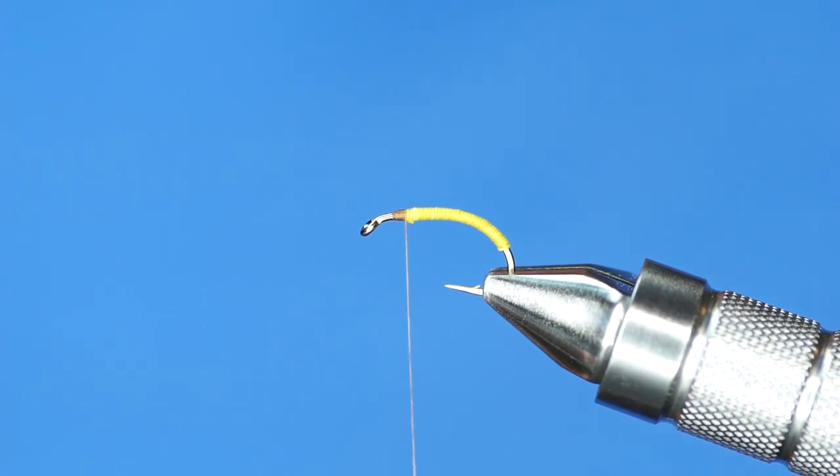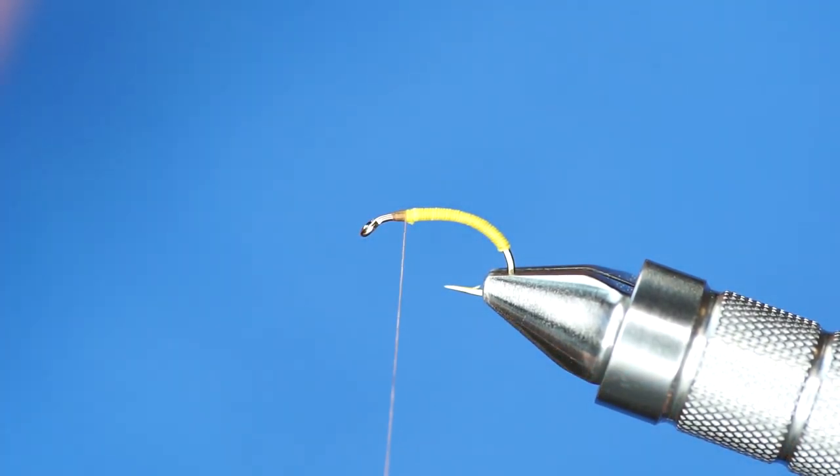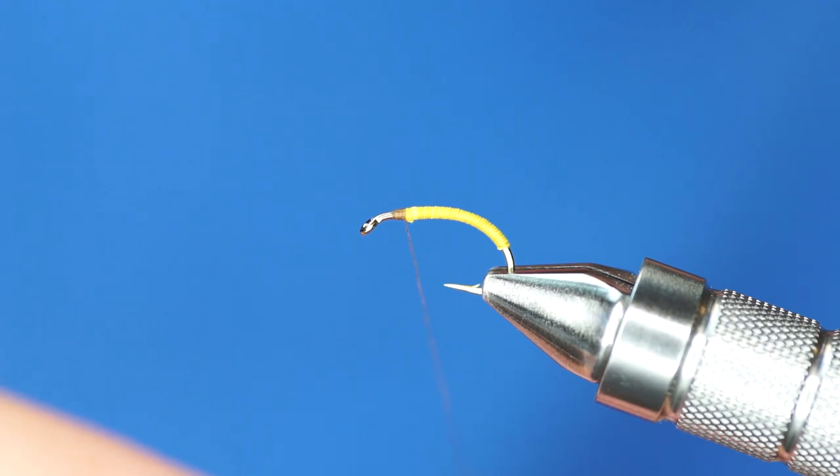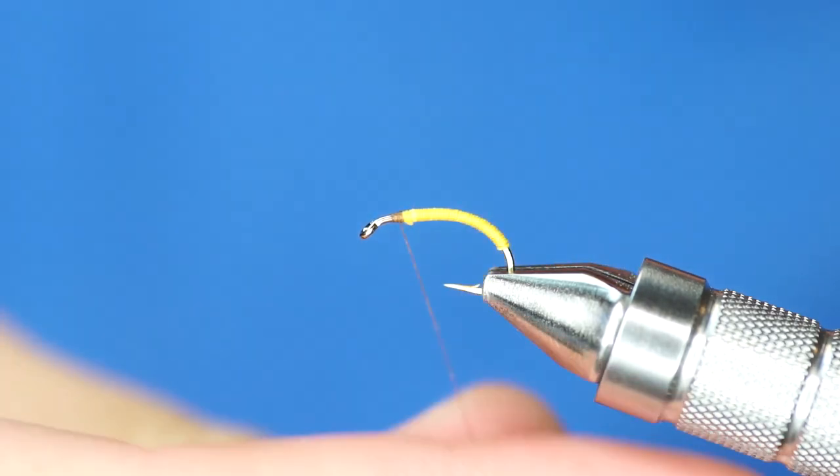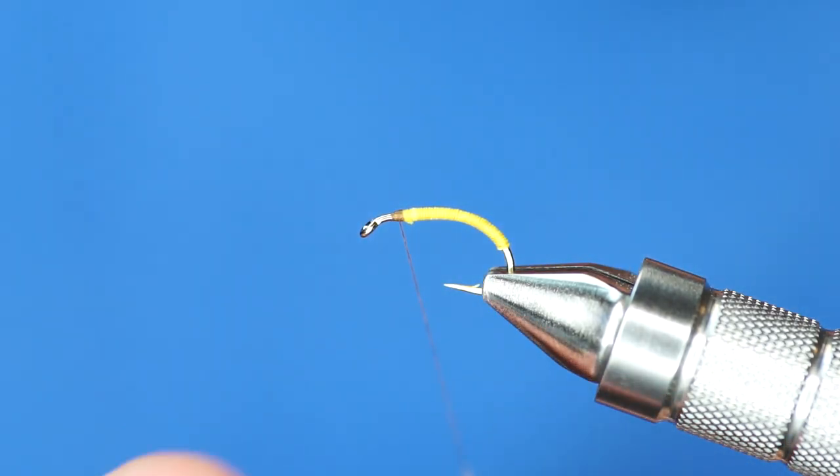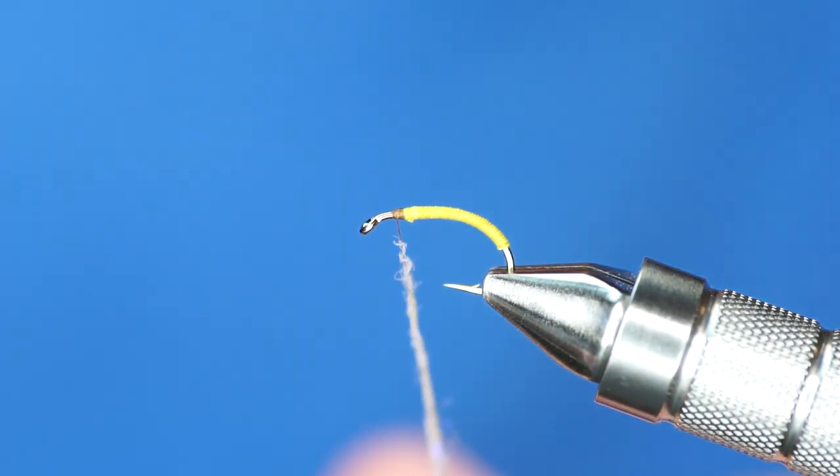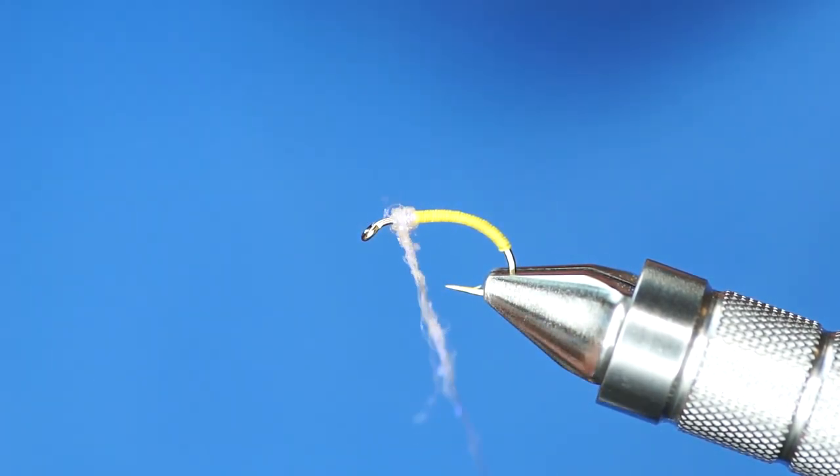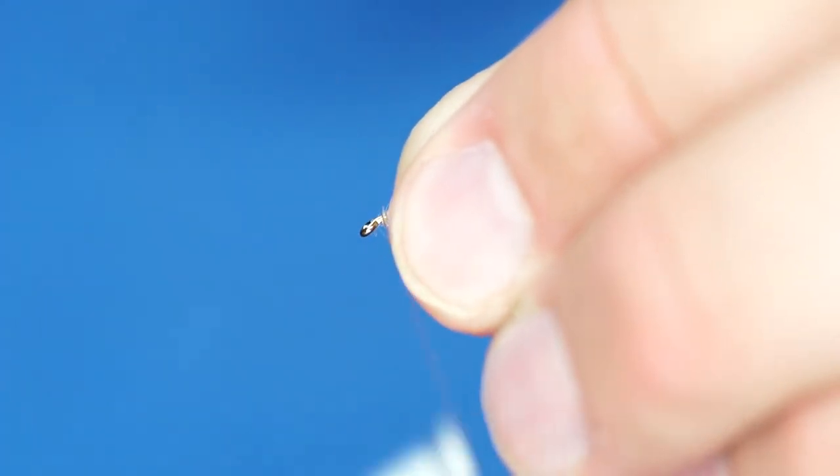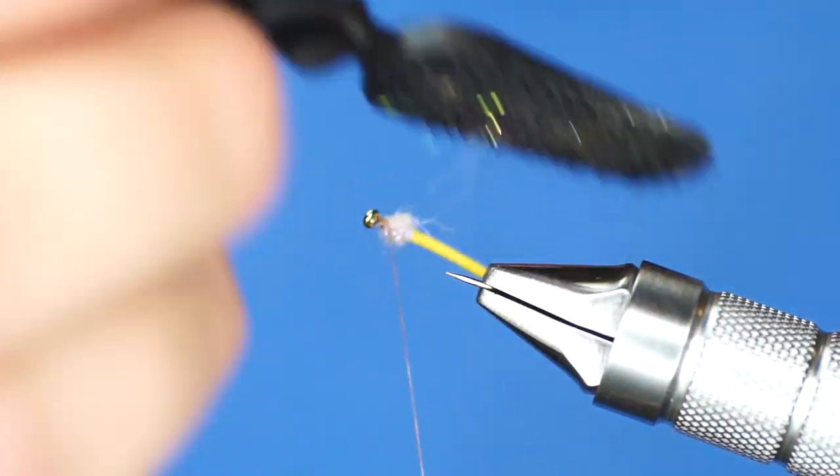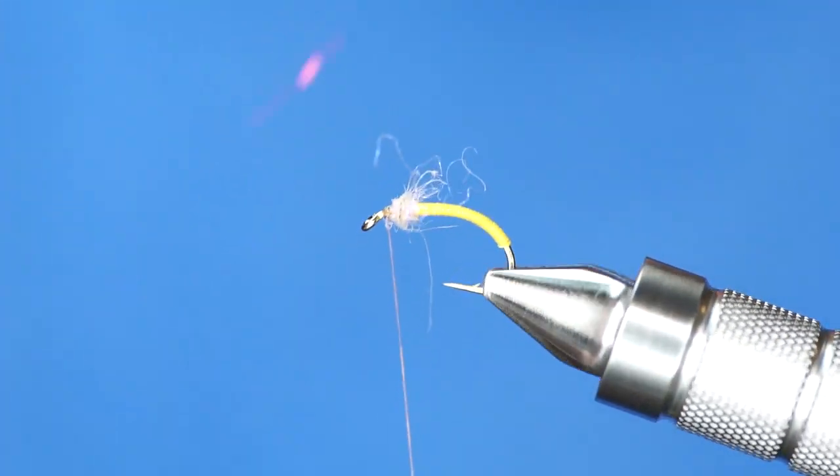So I've just got some brown or camel 8-0 unithread. And for the little thorax or hot spot or whatever you want to call it, I'm just going to use some UV tan ice dub. Just a little sparse ball of dubbing. Brush it out just a little bit.